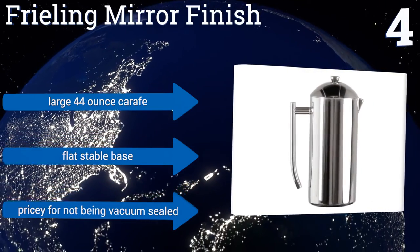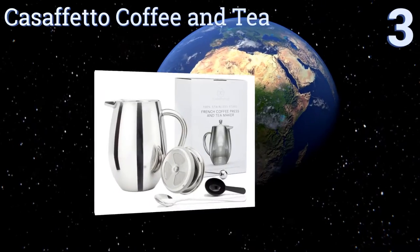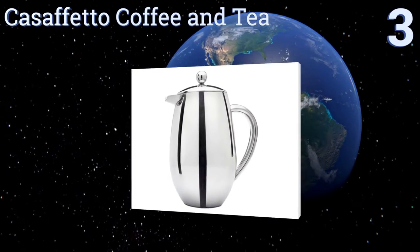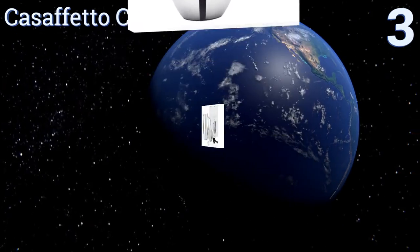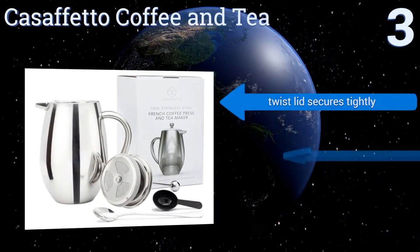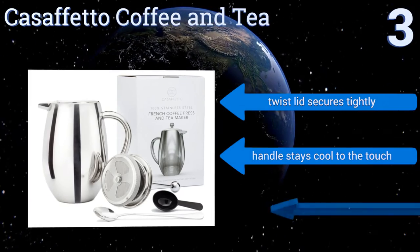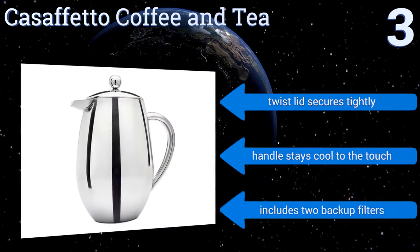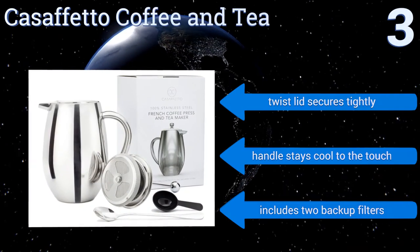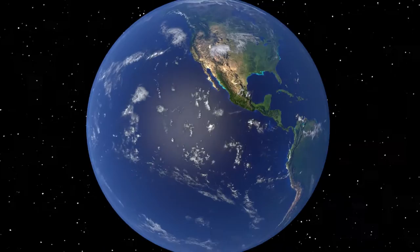Nearing the top of our list at number three, the Casaffetto Coffee and Tea has an attractive curved carafe and a highly polished 18/8 steel construction that makes it durable and beautiful at the same time. It comes with a 34-ounce capacity, so you can brew up to four large cups of coffee. It includes a twist lid that secures tightly, a handle that stays cool to the touch, and two backup filters.